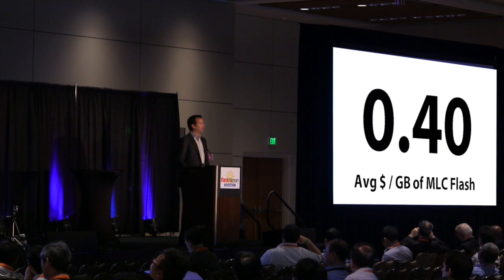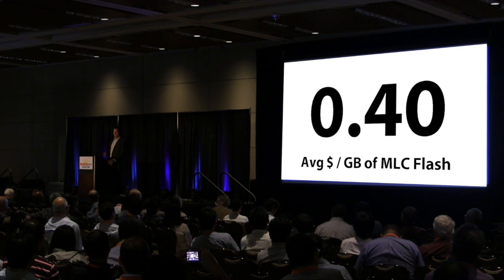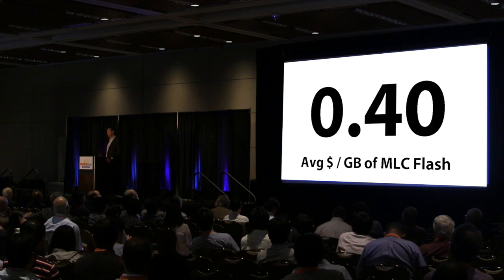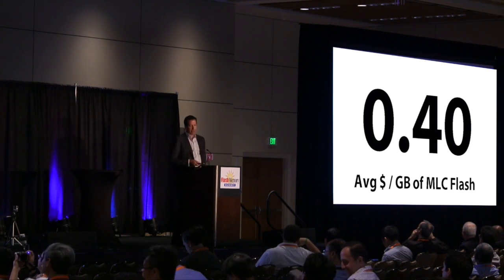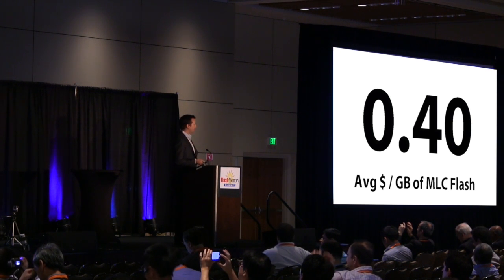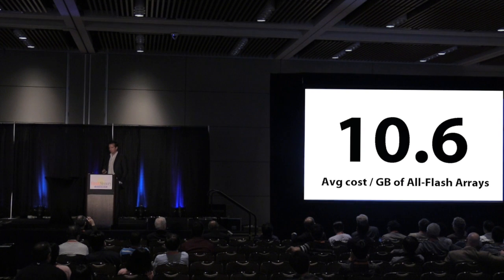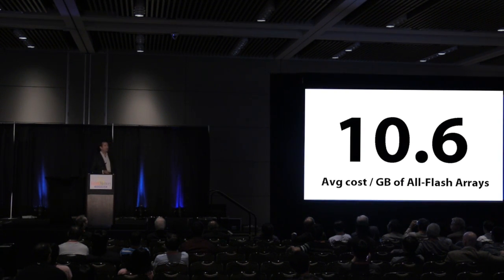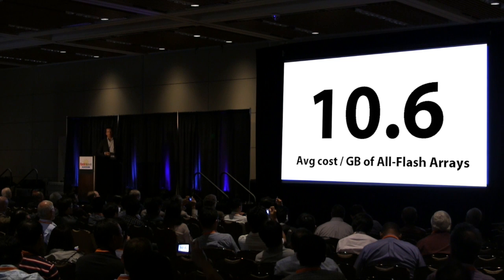What does anyone want to guess what this number is? The answer is $0.40 — the average dollar per gigabyte of MLC flash today. This is DRAM exchange information, publicly available. It looks at 64 gigabit and 128 gigabit NAND flash in the general spot market today. The average cost per gigabyte of an all-flash array that uses the very same NAND is much higher — and there's quite a discrepancy there.